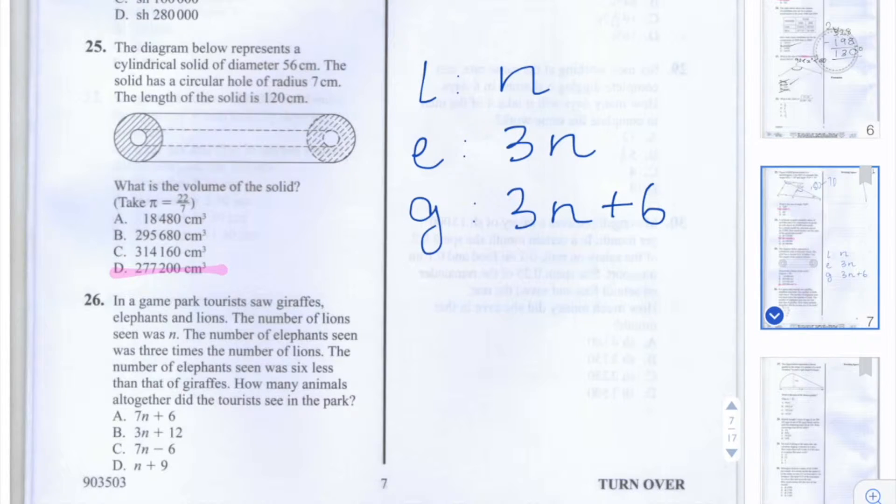So the total number of animals seen is equal to L, the number of lions seen, plus E, the number of elephants seen, plus G, the number of giraffes seen.